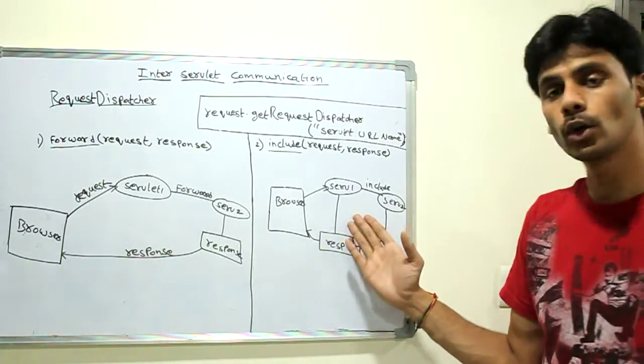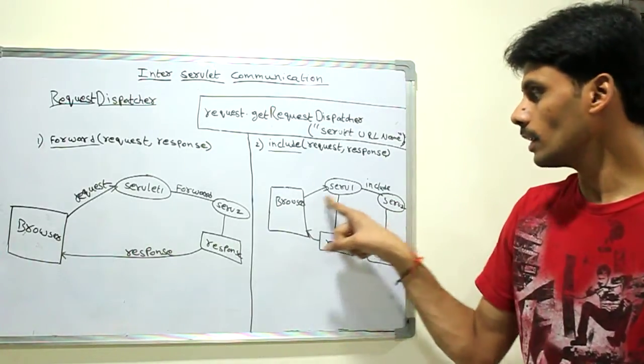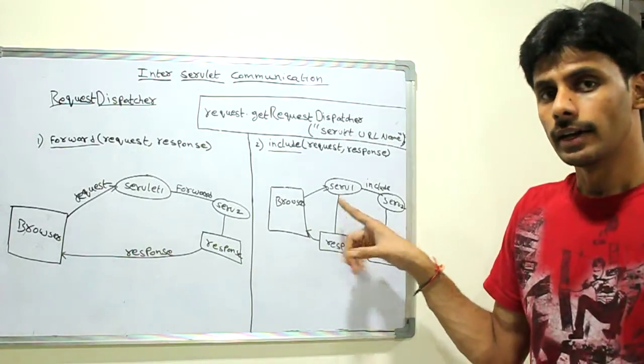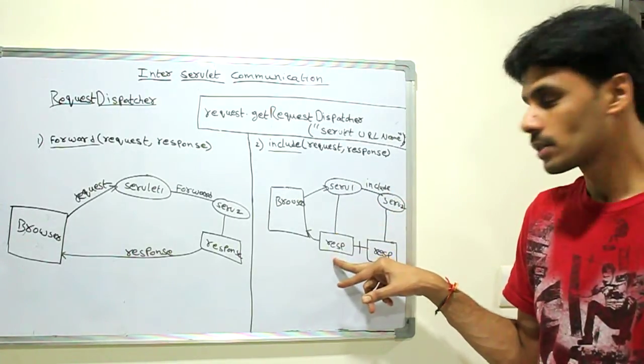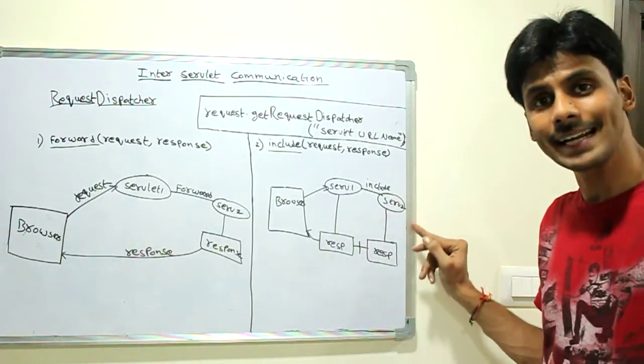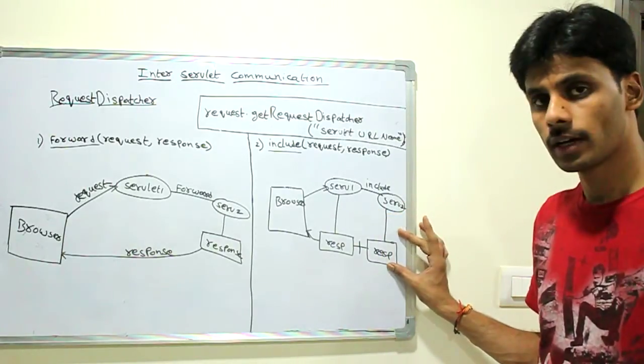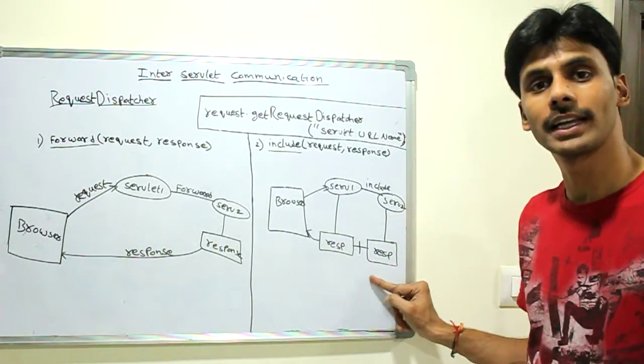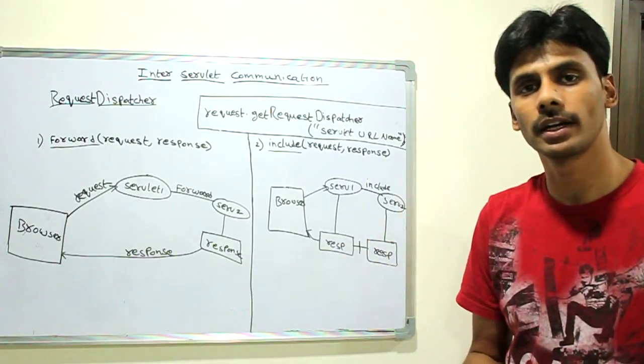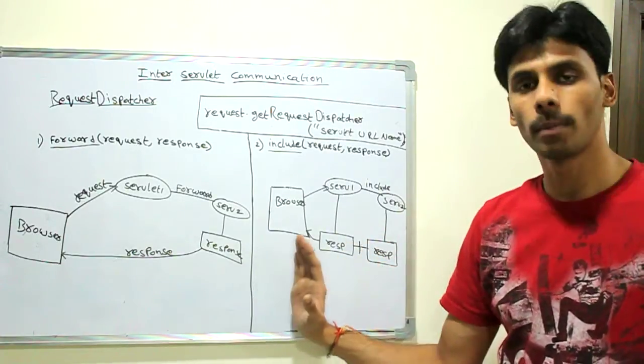Whereas in case of include, the include mechanism, the first servlet does its part of work, generates a response. It then includes the second servlet, which does its work, and the response from the second servlet is merged together with the response of the first servlet, and then sent to the browser.